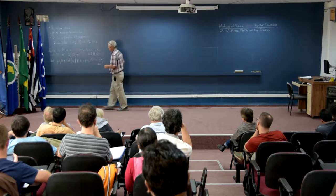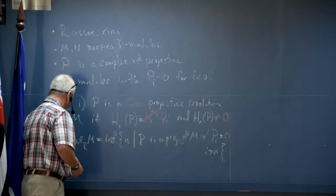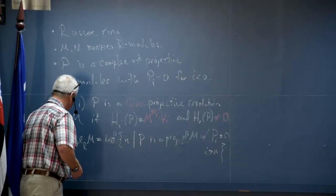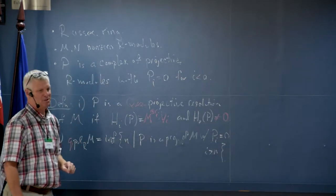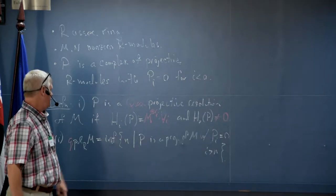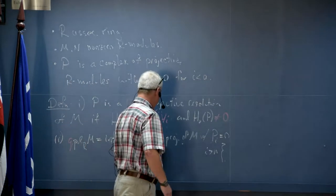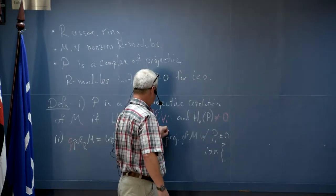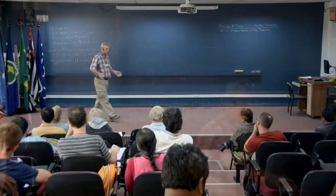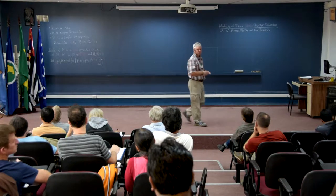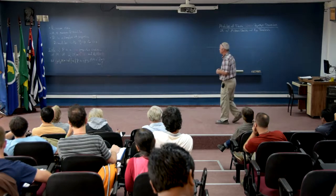I'm just going to change this now — I'm going to put a Q in front to define the quasi-projective dimension. It's the same thing except I now let P be a quasi-projective resolution of M. So I'm just taking the shortest quasi-projective resolution of M — that's the quasi-projective dimension.